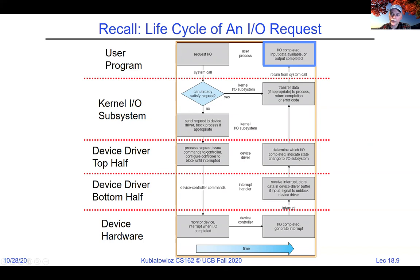The decision between polling versus interrupts can happen partially in the top half of the device driver. The top half could disable interrupts and start polling the device, in which case we wouldn't go to the bottom half at all. If the device gives an unsolicited interrupt — say, a network card receiving a packet — we come into the bottom half. In the network case, there's no process that requested anything; you have an unsolicited packet coming in. The bottom half of the network device does demultiplexing to figure out which socket a packet is headed for.